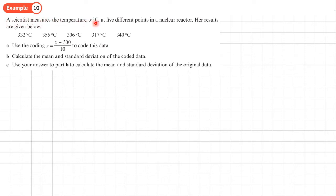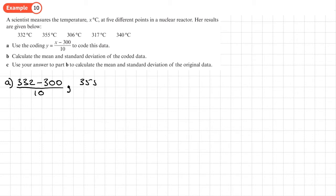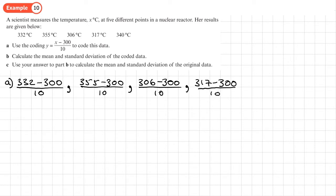Example 10: a scientist measures the temperature x degrees centigrade at five different points in a nuclear reactor. Part a uses the coding y = (x − 300) / 10. We take each x value, subtract 300, and divide by 10. So for 355: (355 − 300) / 10; for 306: (306 − 300) / 10; for 317: (317 − 300) / 10; and for 340: (340 − 300) / 10.